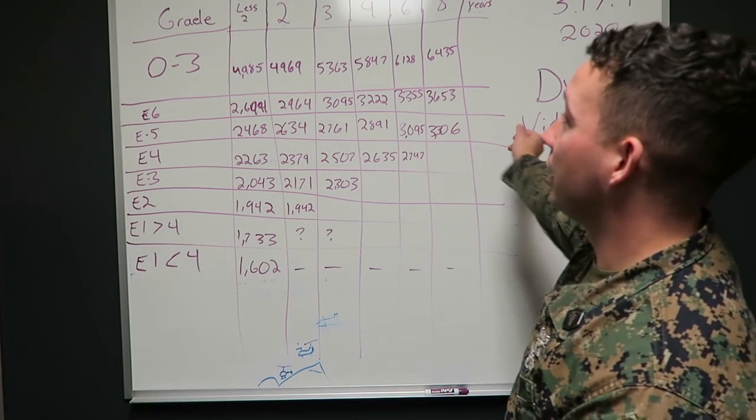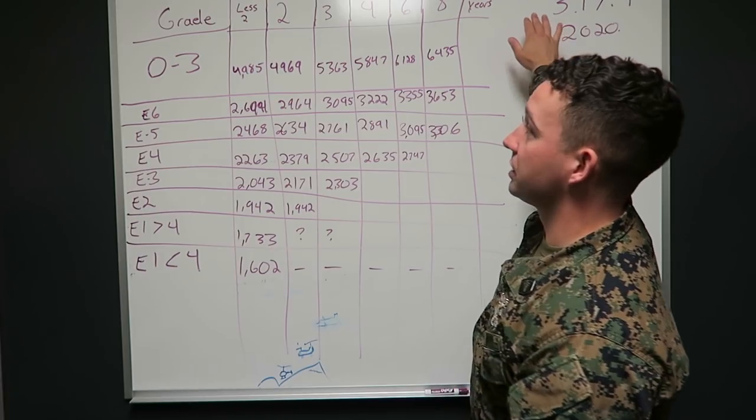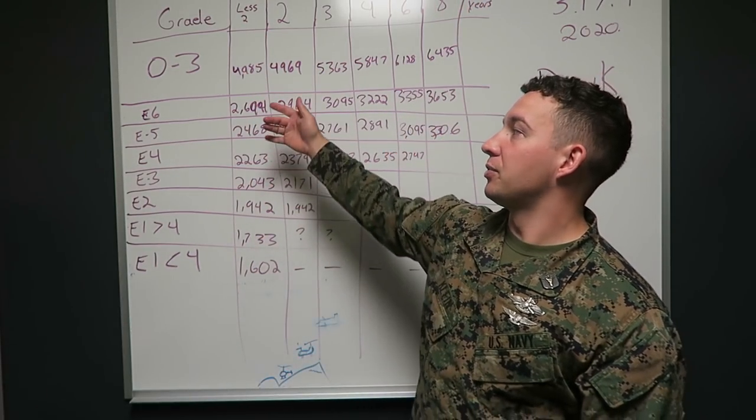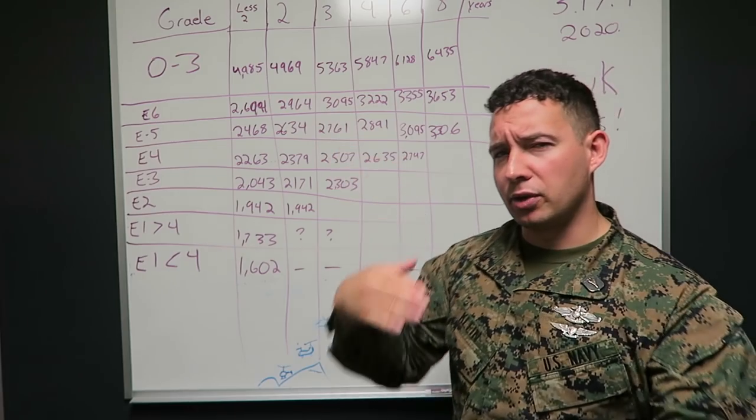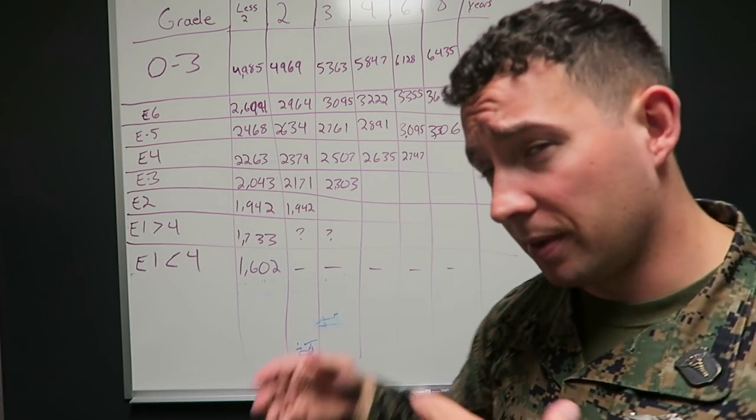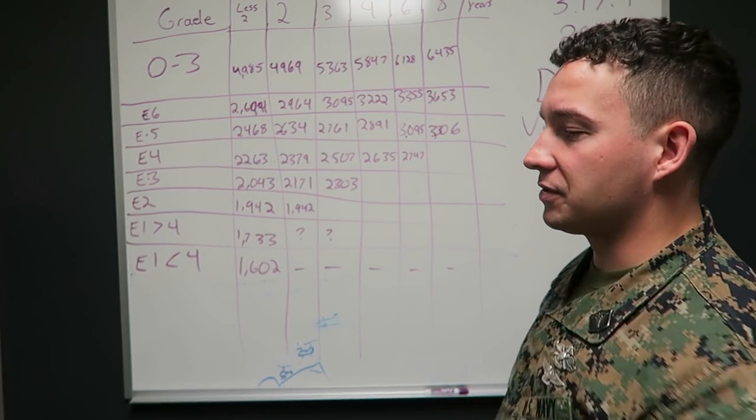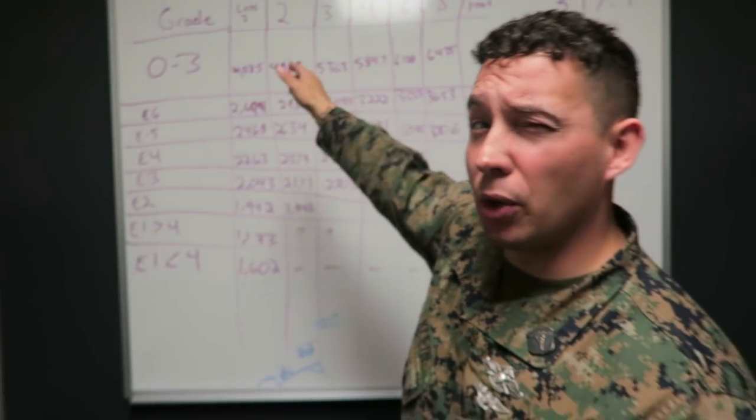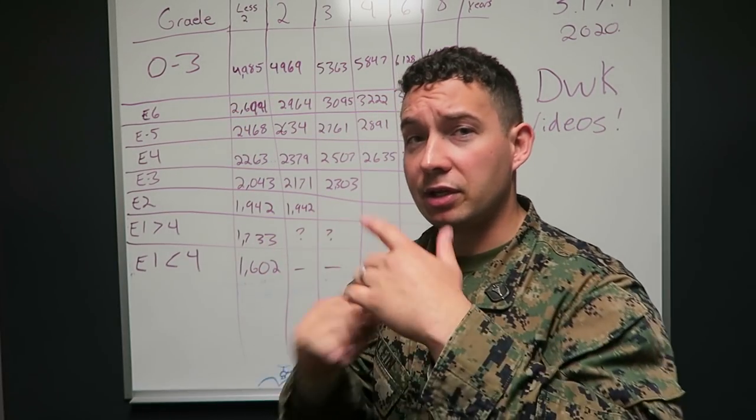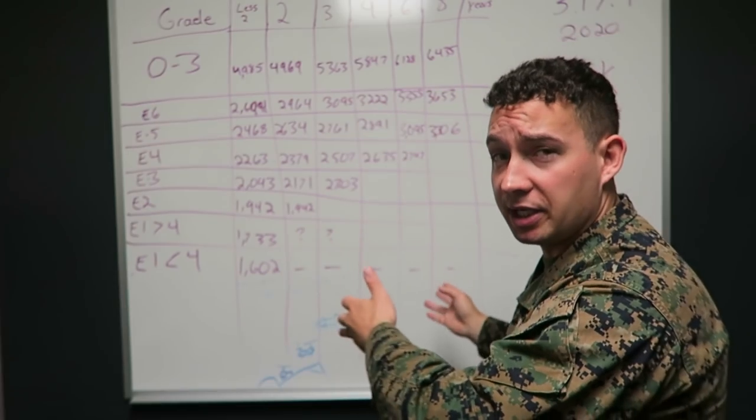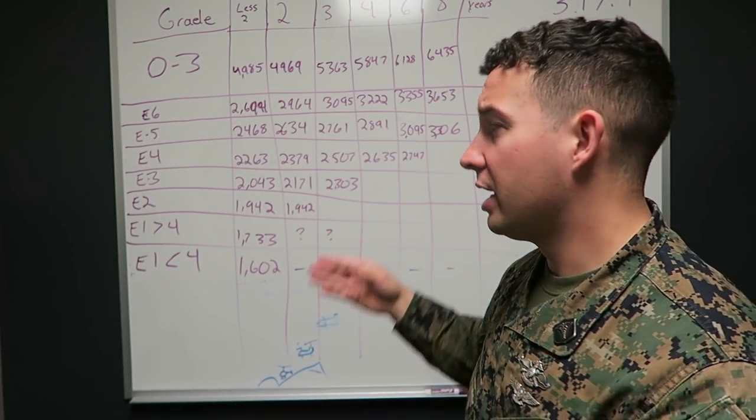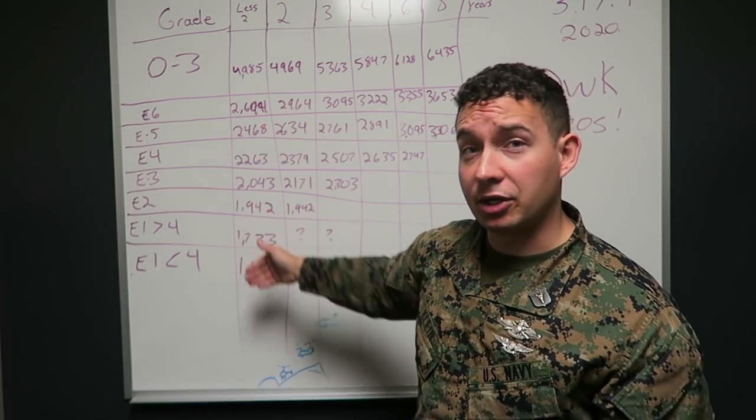So to understand this chart right here, you have years of service across the top and then pay grade on the left. Now I did E1 through E6 and then O3 because I know a lot of medical people watch my channel because I'm a corpsman. So out of the medical officers watching my channel, a lot of you come in in the Navy as O3.